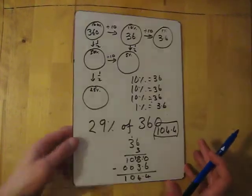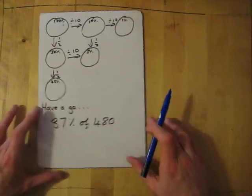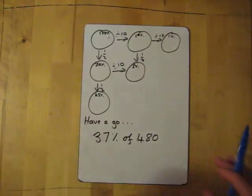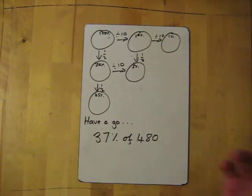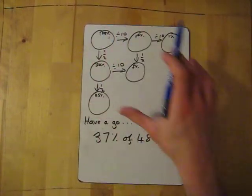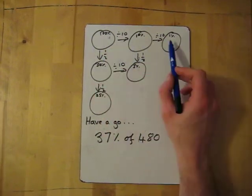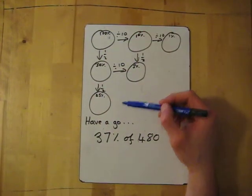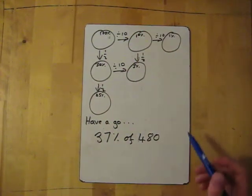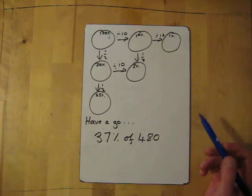For one for you to have a go at yourself, we've got 37% of 480. I would suggest drawing the grid or using the grid, depending on what way you want to do it. Remember: across divide by 10, down we're halving.